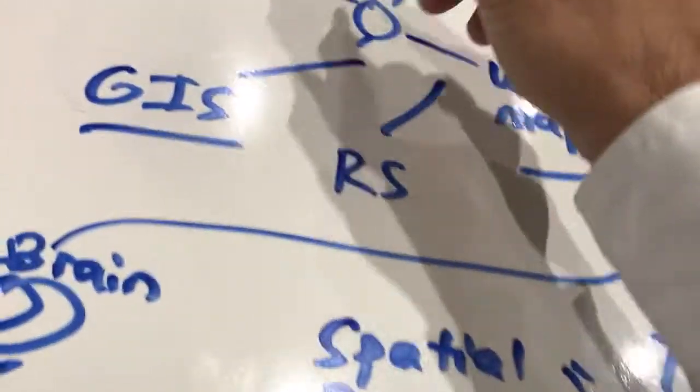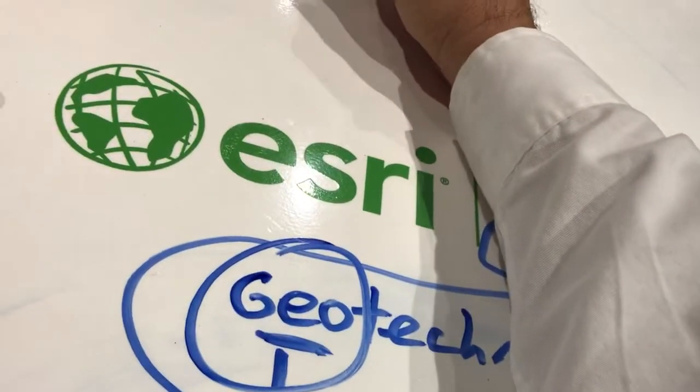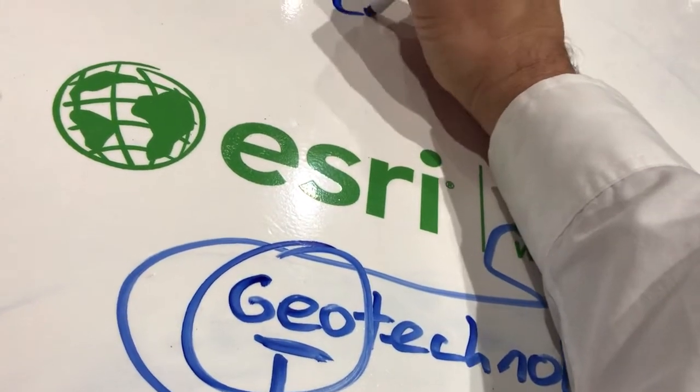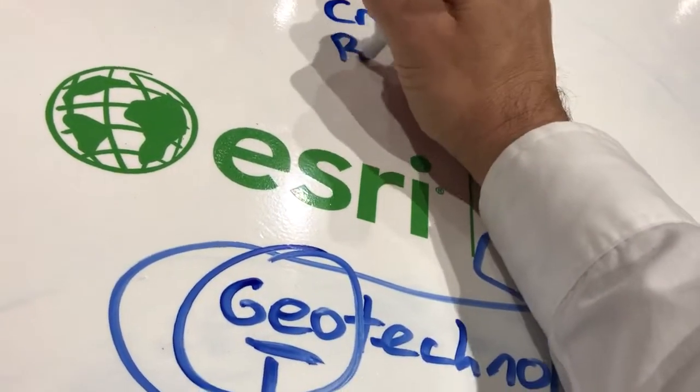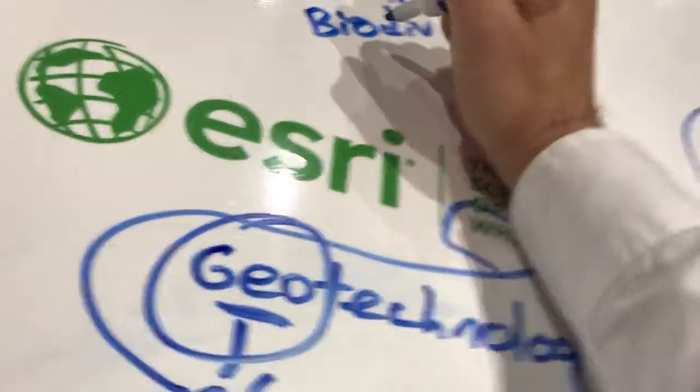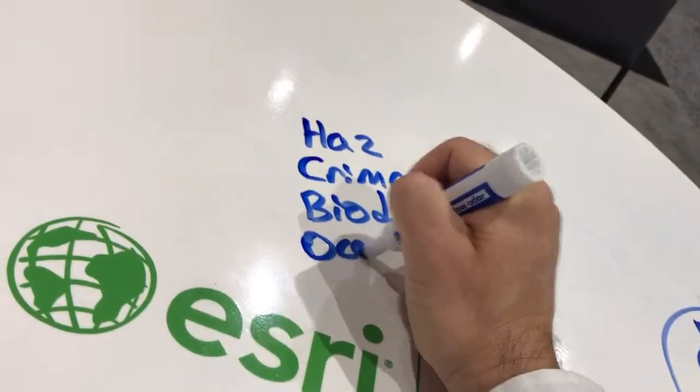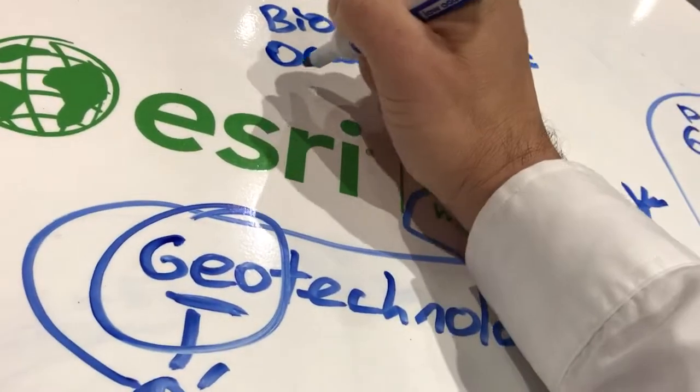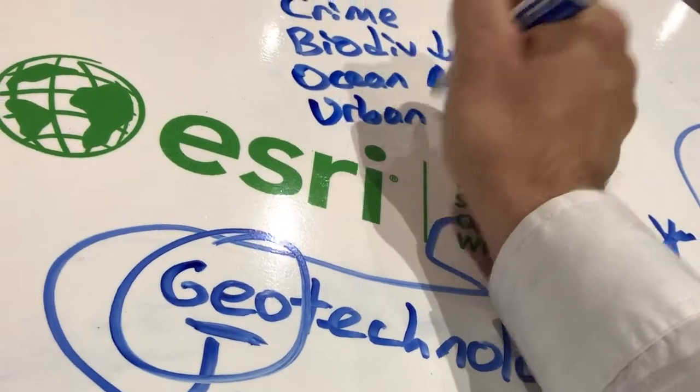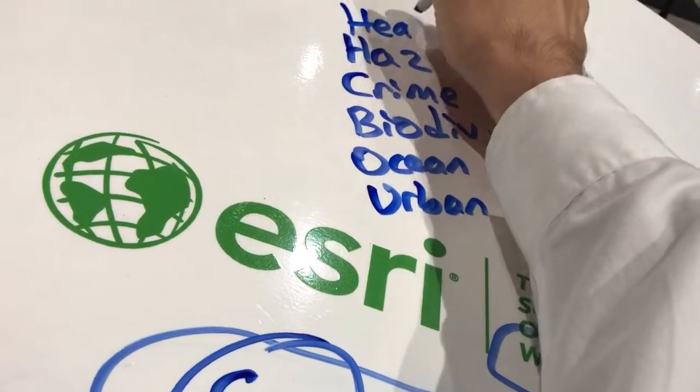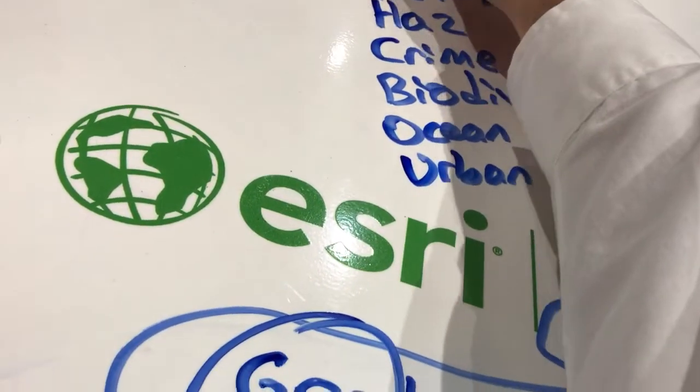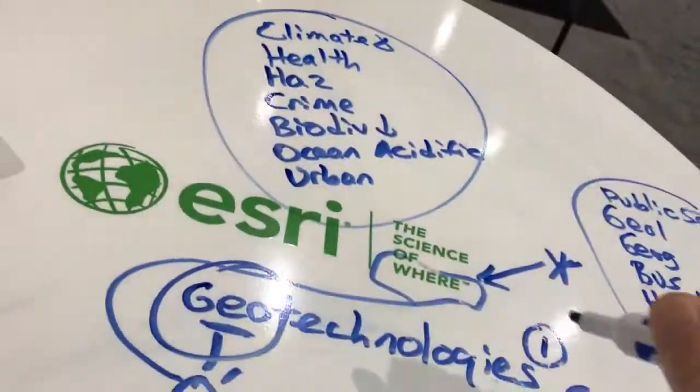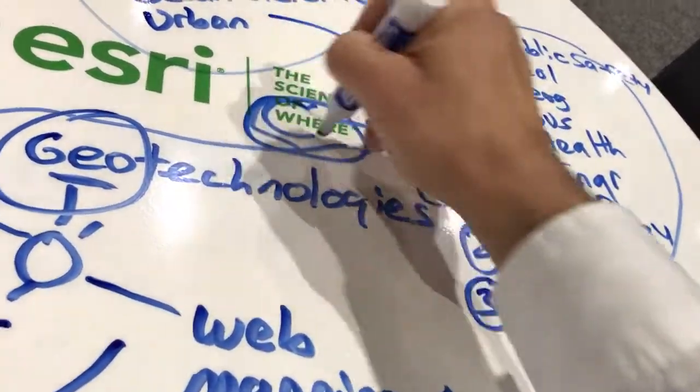And the forces in society that were actually natural hazards, crime, biodiversity loss, ocean acidification, urbanization, health, climate change. All these issues and problems actually have a where component.